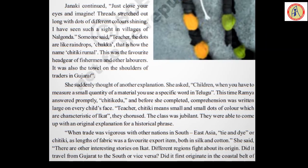Janaki continued: Just close your eyes and imagine — threads stretched out long with dots of different colors shining. I have seen such a sight in villages of Nalgonda. Someone said: Teacher, the dots are like raindrops — Chukka, that is how the name Chitiki Rumal came. This was the favorite headgear of fishermen and other laborers — a piece of cloth worn on the head. It was also the towel on the shoulders of traders in Gujarat.